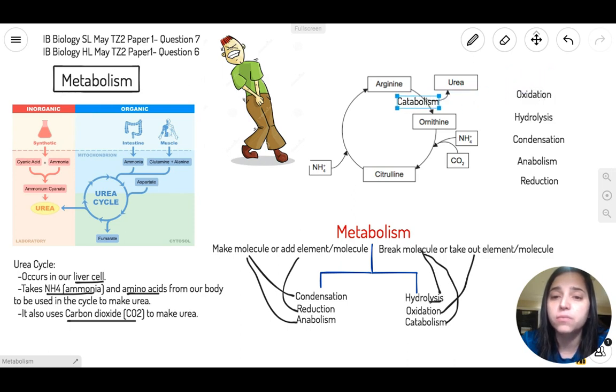If you notice here, arginine is breaking down into urea and ornithine, right? So this means it's catabolism. At the same time, oxidation - you're taking out an element - so if you're taking out that arginine, this is also known as oxidation. At the same time, you have hydrolysis, which is breaking down into pieces, so arginine is broken down into two pieces. That will also be hydrolysis right here.